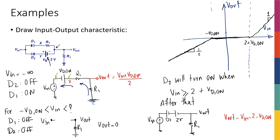To summarize the diode states: at the start, D1 is on and D2 is off; in the middle, both D1 and D2 are off; at the end, D1 is off and D2 is on. Both two-diode examples I've solved have three different situations with both diodes off in the middle — but this isn't always the case. I encourage everyone to solve all the examples in Assignment 2, which will be posted at the beginning of this week, to see different scenarios.